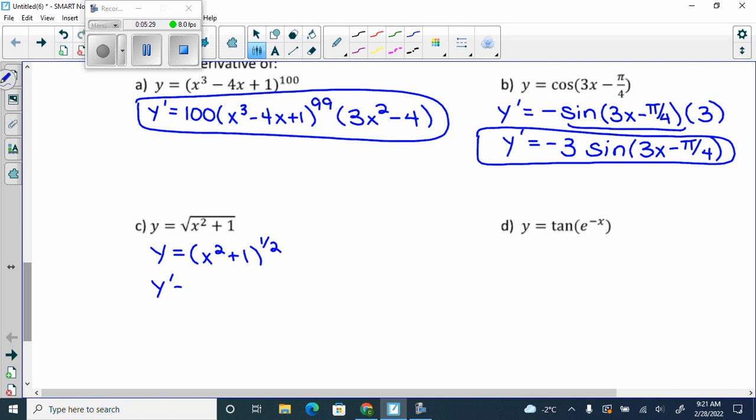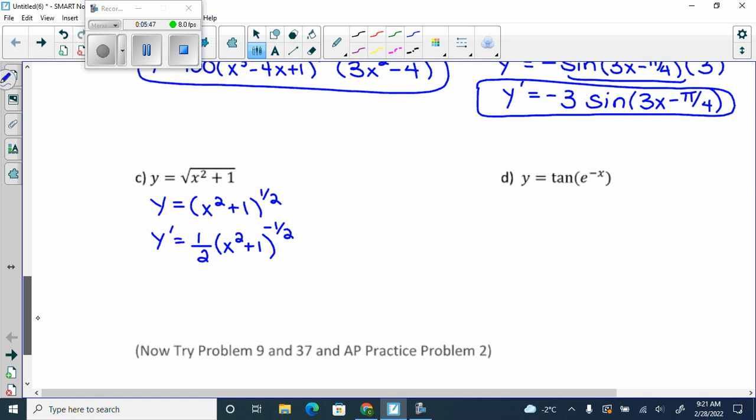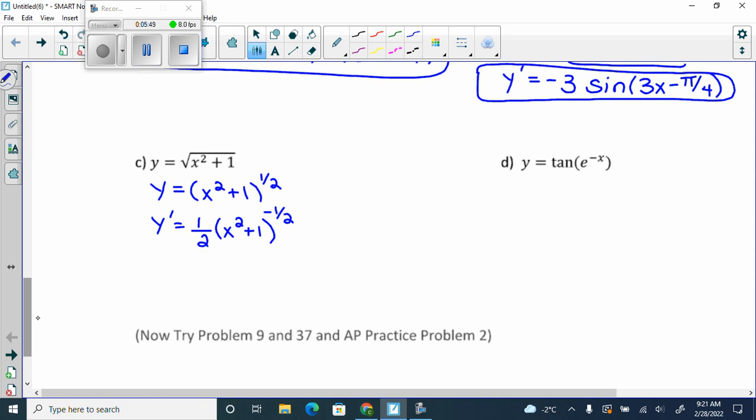So, y prime equals, how do I do the derivative of this one? The half drops in front. This just gets rewritten. And then 1 half minus 1 is negative 1 half. And then I'm done. No, I'm not. Because I am doing chain rule. So I need some chains here. So what's the next one?